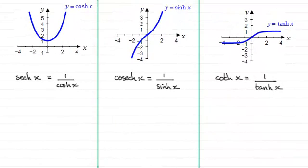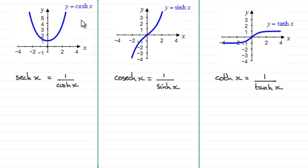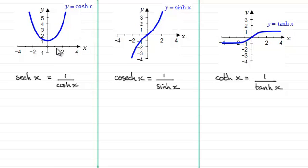Hi there. Welcome to this video on sketching the graphs of y equals sech x, y equals cosech x, and y equals coth x. I'm going to show you how we can develop these graphs based on the three graphs you see here: y equals cosh x, y equals sinh x, and y equals tanh x. I'm assuming you're familiar with each of these three graphs. The method I'm going to use is to look at what happens when x equals zero, then the behaviour of the curve when x tends to infinity, and when x tends to minus infinity.